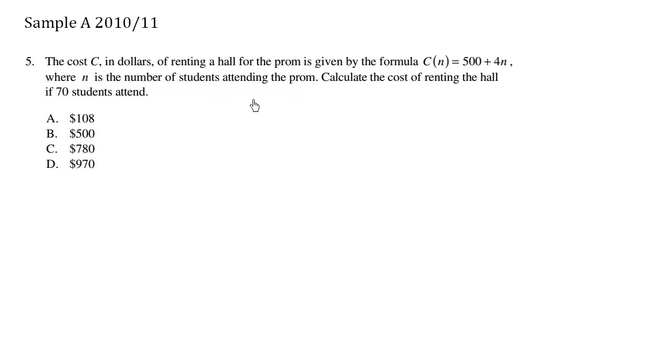So we know the number of students is 70, so n equals 70. What we have here is the cost is a function of the number of students, n.